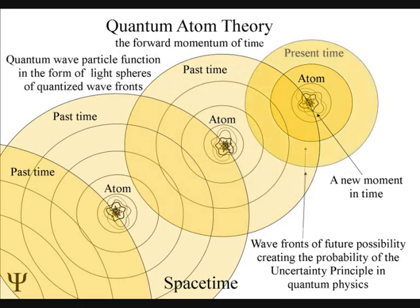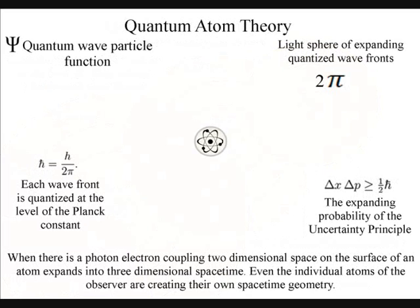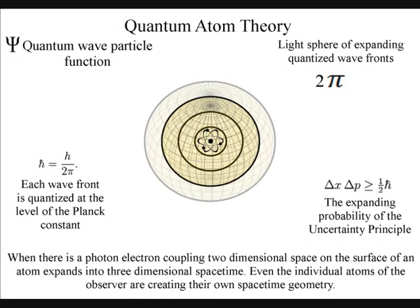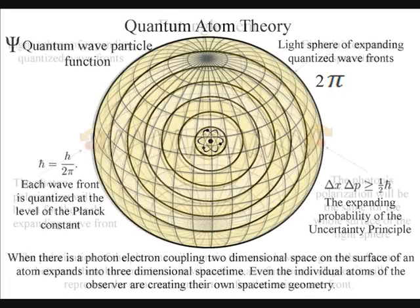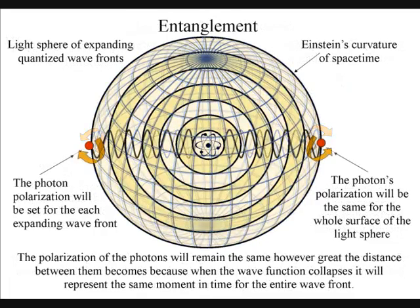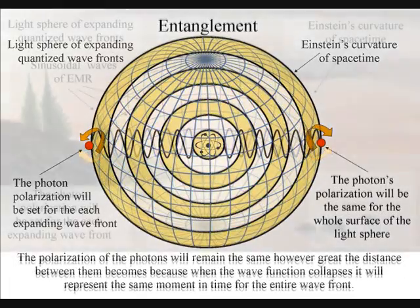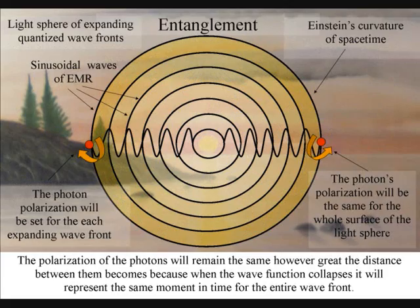Light moves in straight lines but in three-dimensional space it will expand out in all directions forming light spheres. The polarization of the light will be the same for the entire surface of the light sphere creating quantum entanglement and the symmetry and geometry of spacetime.